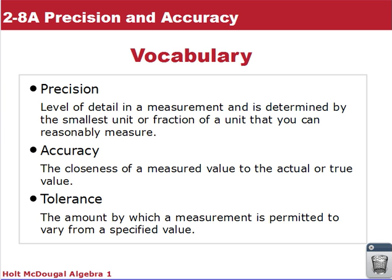Three vocabulary terms today. First one is precision. Precision is the level of detail in the measurement and is determined by the smaller unit or fraction of a unit that you can reasonably measure.